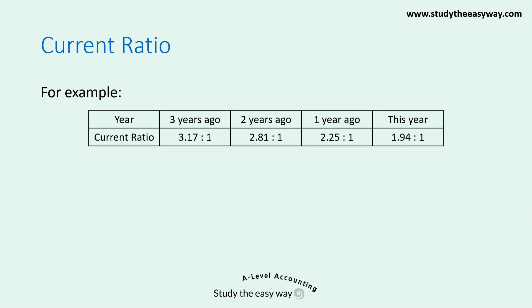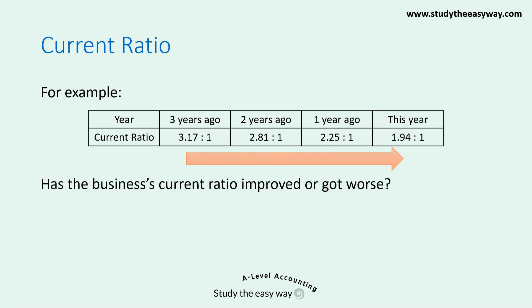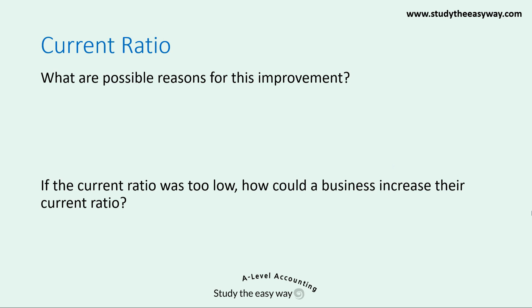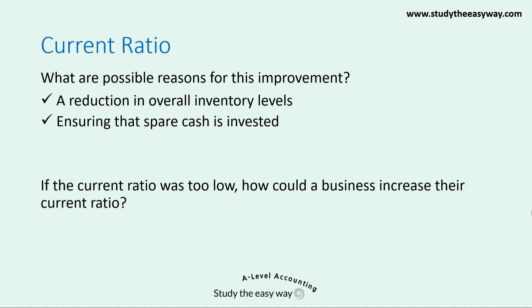Here's an example. This table shows the current ratio over four years. The question is: is the business's current ratio improving or getting worse over time? The ratio has improved. Previously it was too high, indicating levels of inventory, trade receivables, or cash that were too high. This year, the current ratio stands at a level very close to the ideal. Possible reasons for this improvement include a reduction in overall inventory levels, the business investing spare cash, or repayment of a loan.